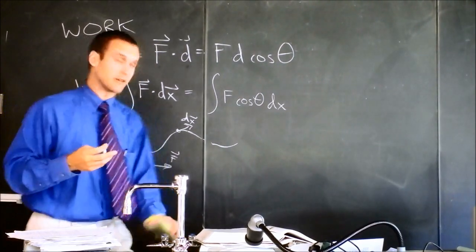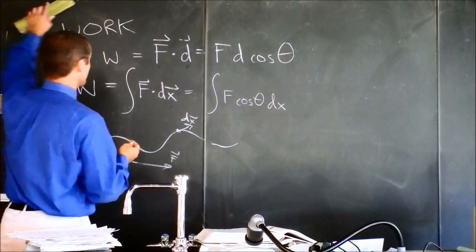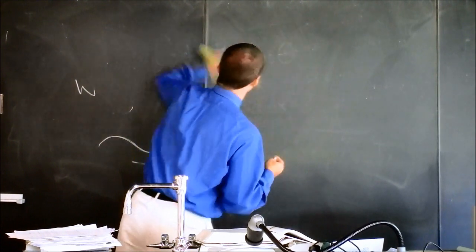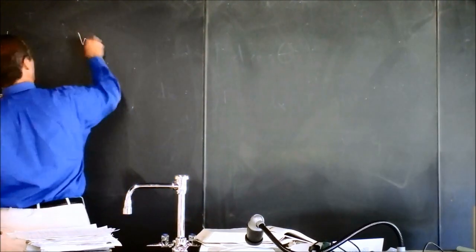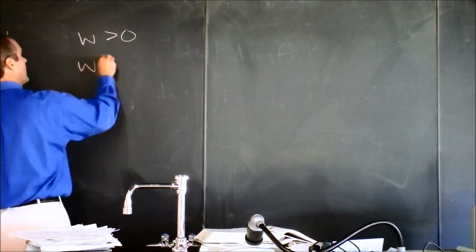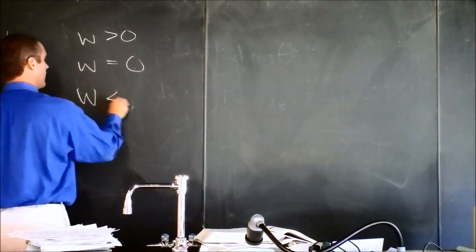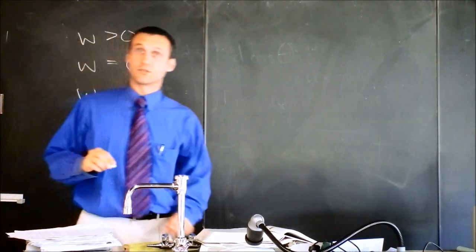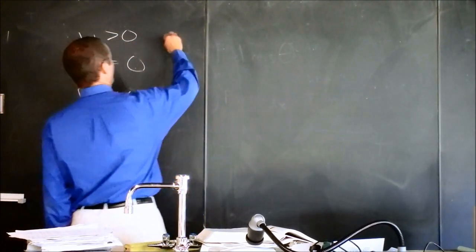So this leaves us a couple possibilities. I guess it's three possibilities. We can have work greater than zero, we can have work equal to zero, and we can have work less than zero.